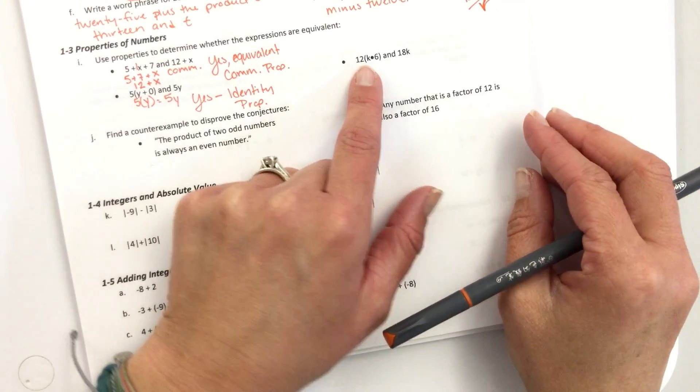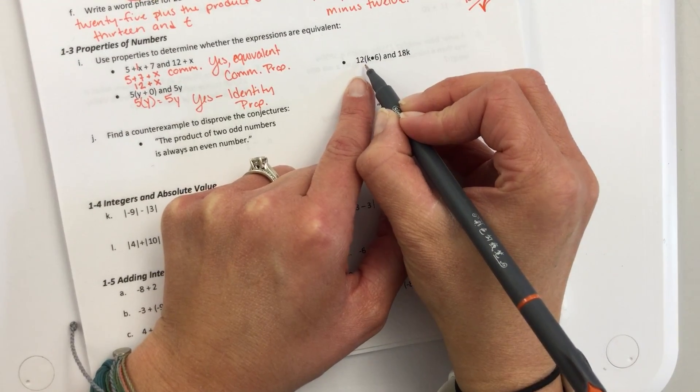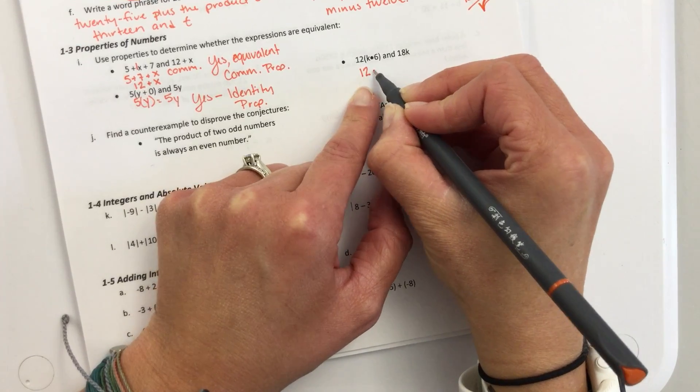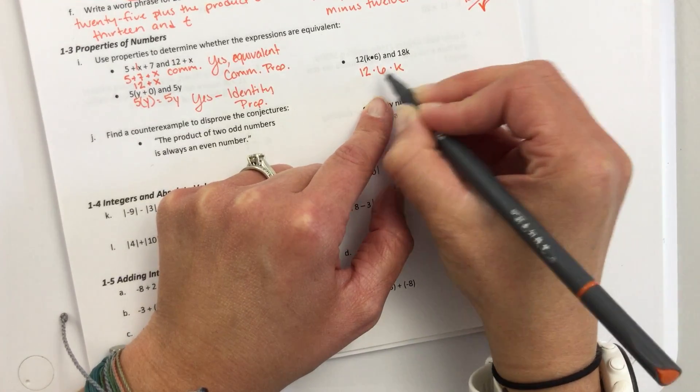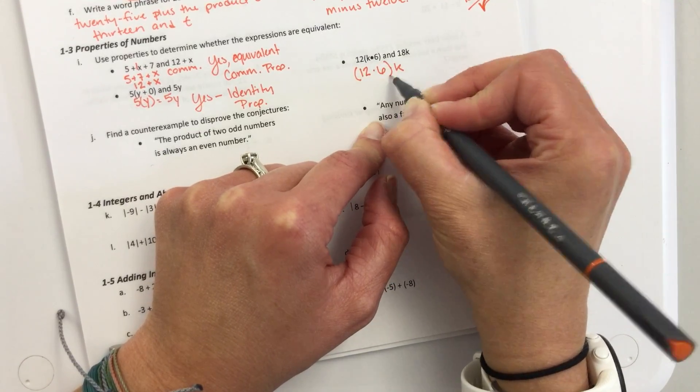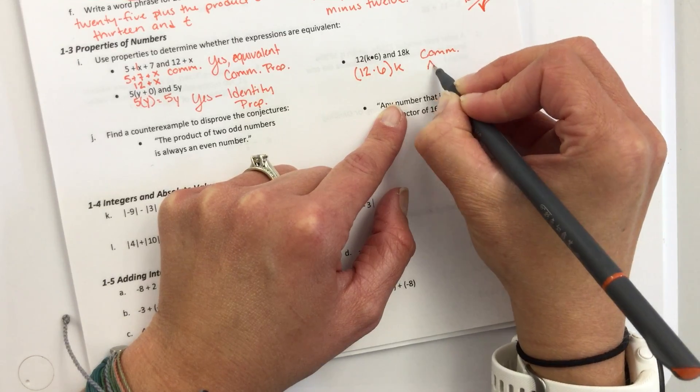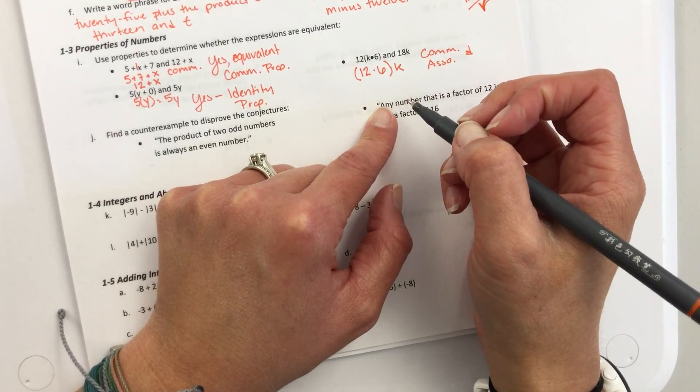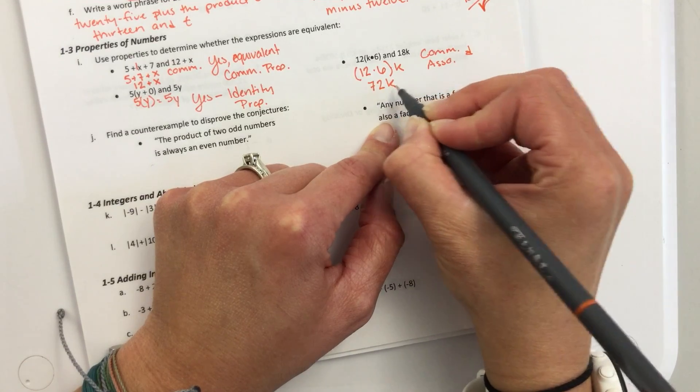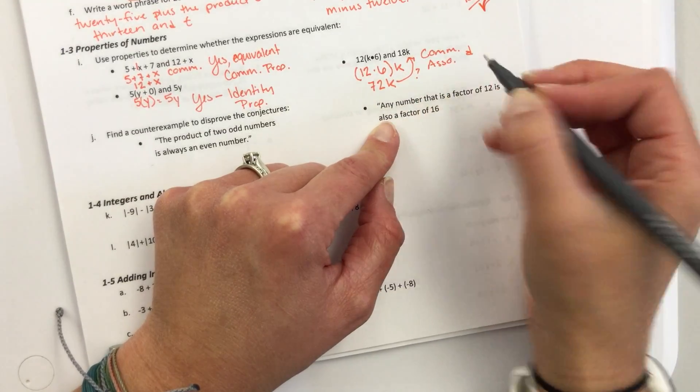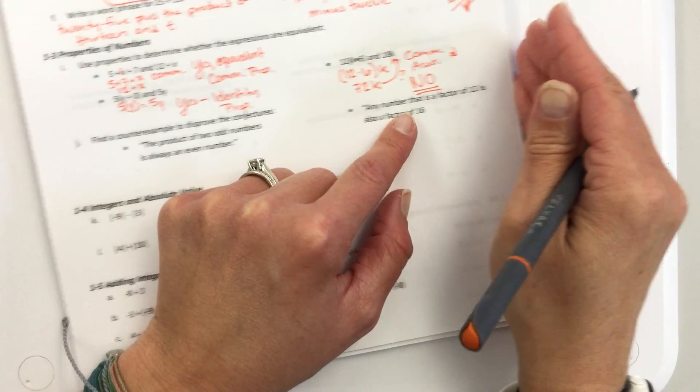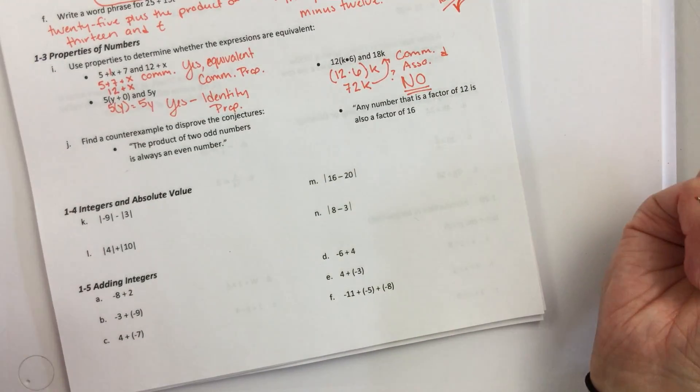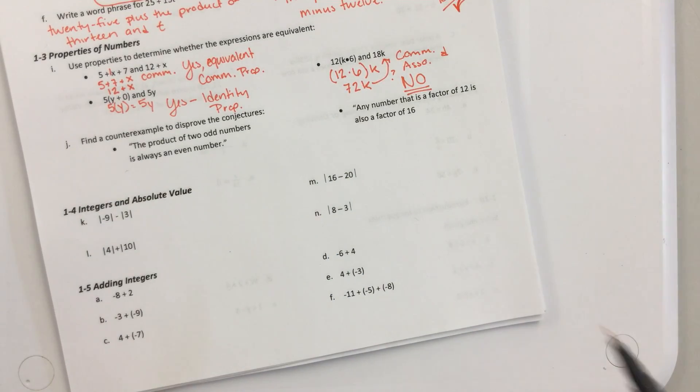So, the next one right here, are they equal? No, because I could switch the order of this. I could do 12 times 6 times K. So, I just use the commutative, and then I could use the associative and change where the parentheses are, commutative and the associative. What's 12 times 6? 72. Does 72K equal 18K? No. How do we know? We use the commutative and the associative property to solve it. So, these properties, you guys have been using lots, you just haven't been naming them.